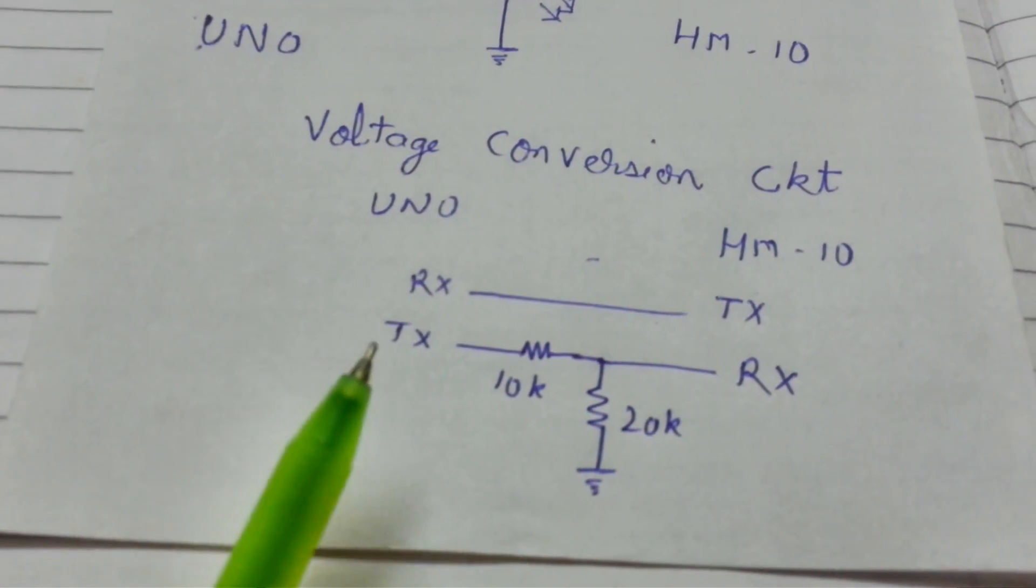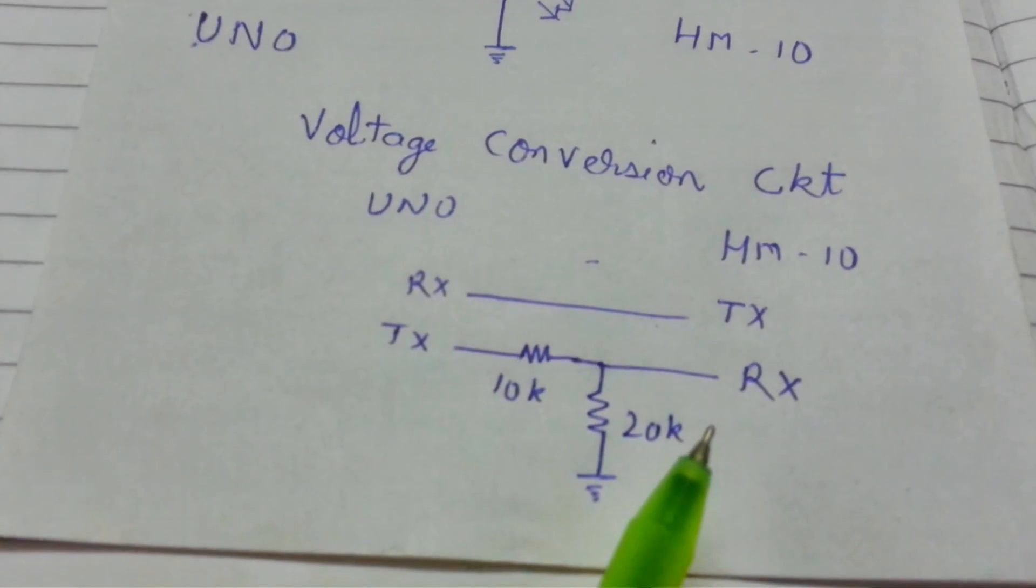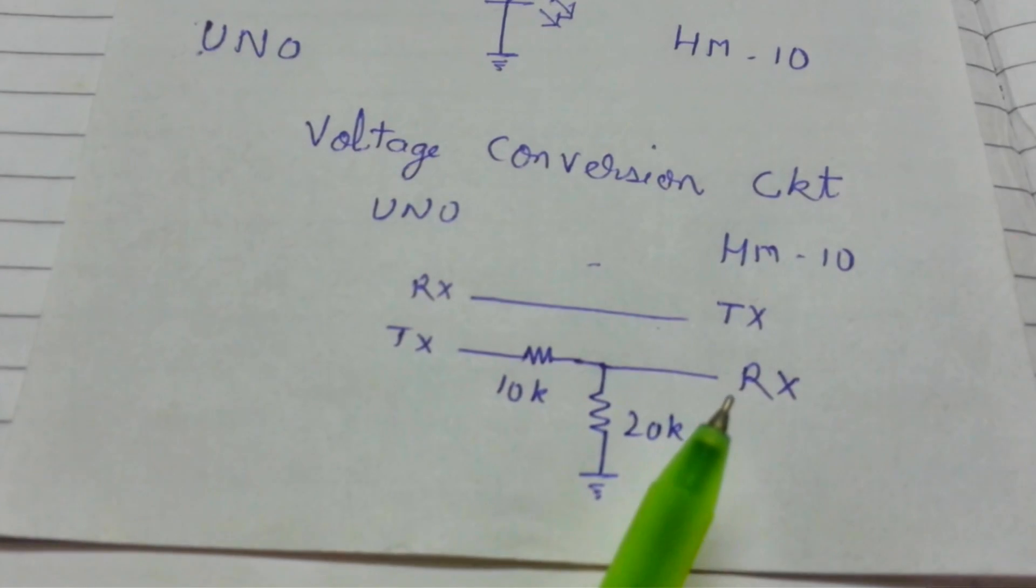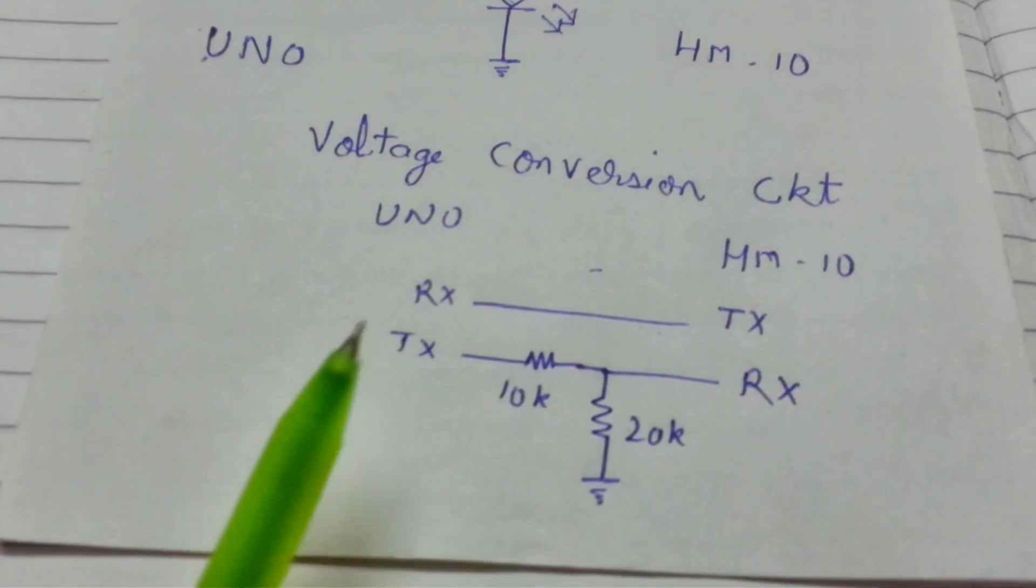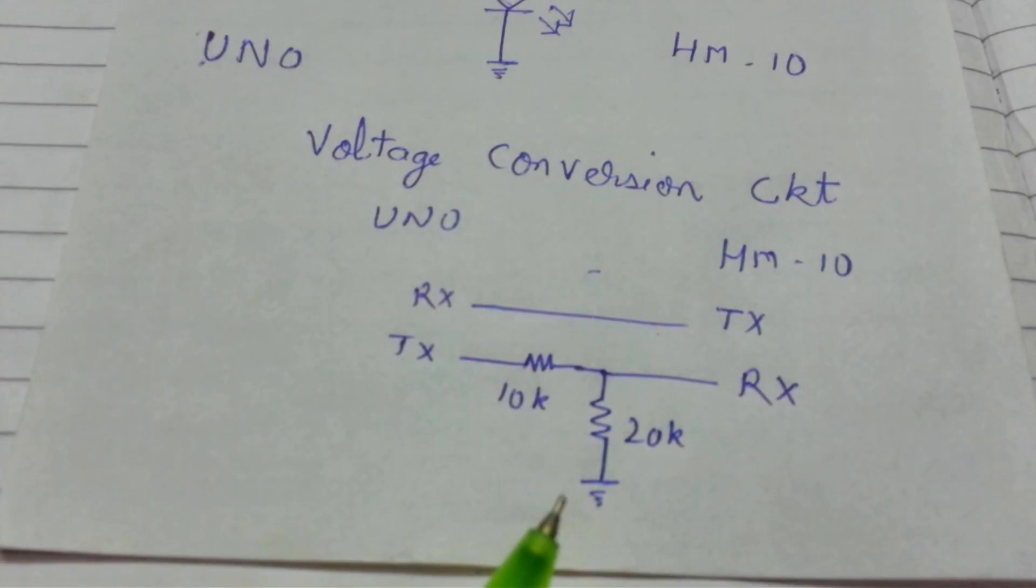I have tried using direct connections and it is still working, but in order to not blow up your HM-10 module, you can use your voltage divider circuitry.